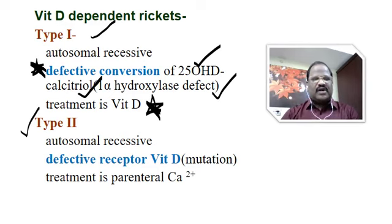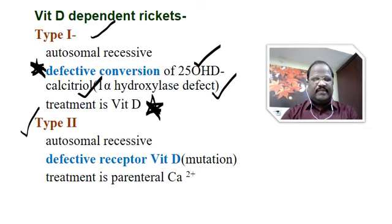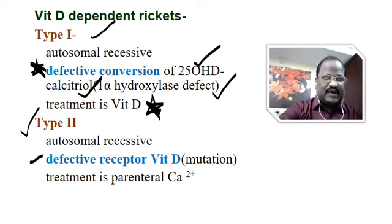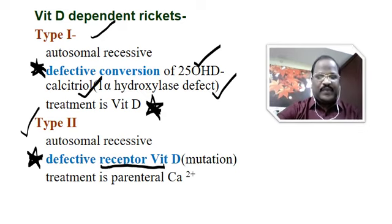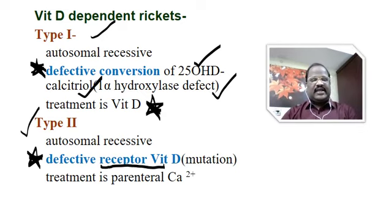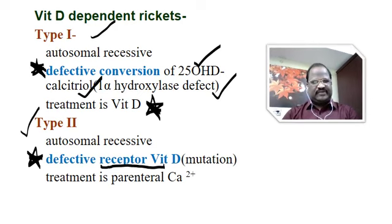Whereas type 2 vitamin D-dependent rickets is also an autosomal recessive disorder. Here the pathology is a defect in the vitamin D receptor. So in type 2, we have to give parental calcium supplementation.